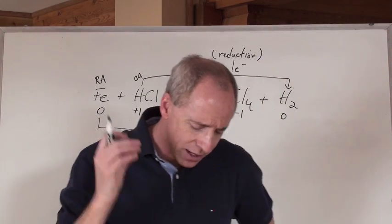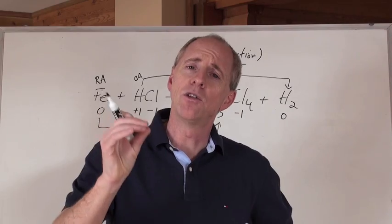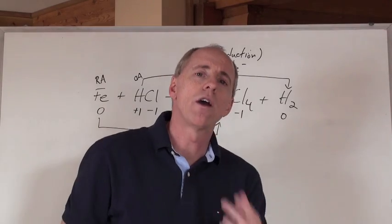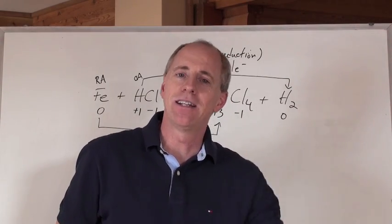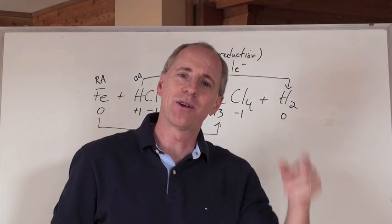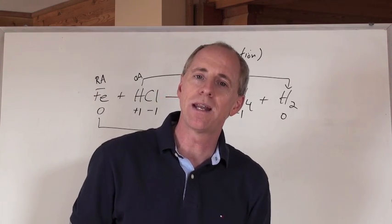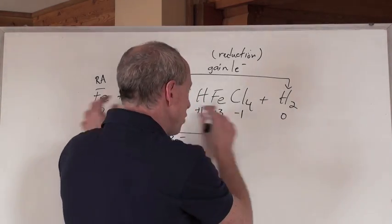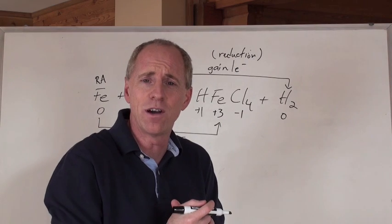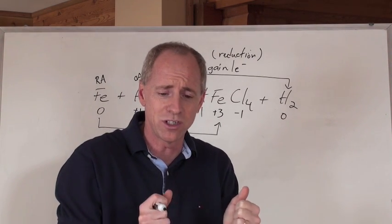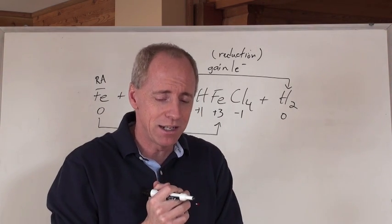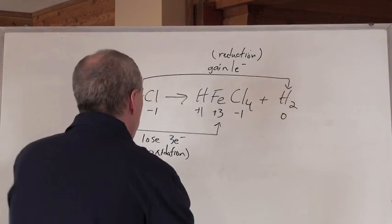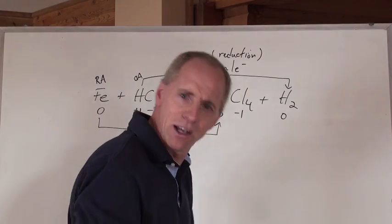Now, nobody's going to try to trick you. If you get a gain of electrons and a gain of electrons, something's wrong in what you've done — that's not allowed. It can't be red-red, and it can't be ox-ox — it's redox. One is gaining and one is losing, that's the way it has to be. If you're sure you did everything right and you found two things undergoing reduction, go to your teacher and say, could there be a mistake here? And then your teacher, shamefacedly, will make the correction. I've done it a hundred times.